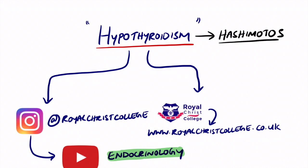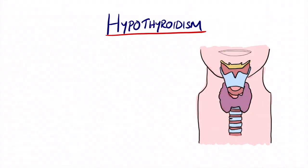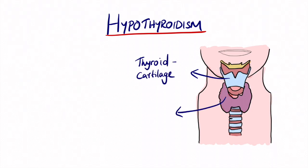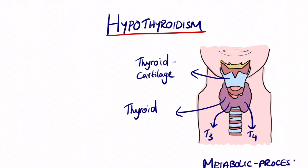To understand hypothyroidism, let's look at the anatomy. On screen we have the thyroid cartilage as well as the thyroid organ. The thyroid organ is responsible for production of T3 and T4, which leads to the metabolic process.